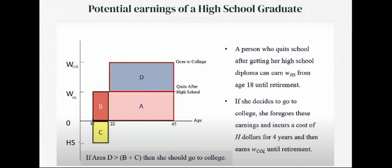We can also see additional portions of the graph represented by C and D. Somebody who decides to go to college is represented by D plus A, but they have to give up years of salary represented by B and direct costs represented by C. If area D exceeds all the costs combined — A, B, and C — then it makes sense to go to college. Thus, if area D is greater than B plus C, the person should go to college.